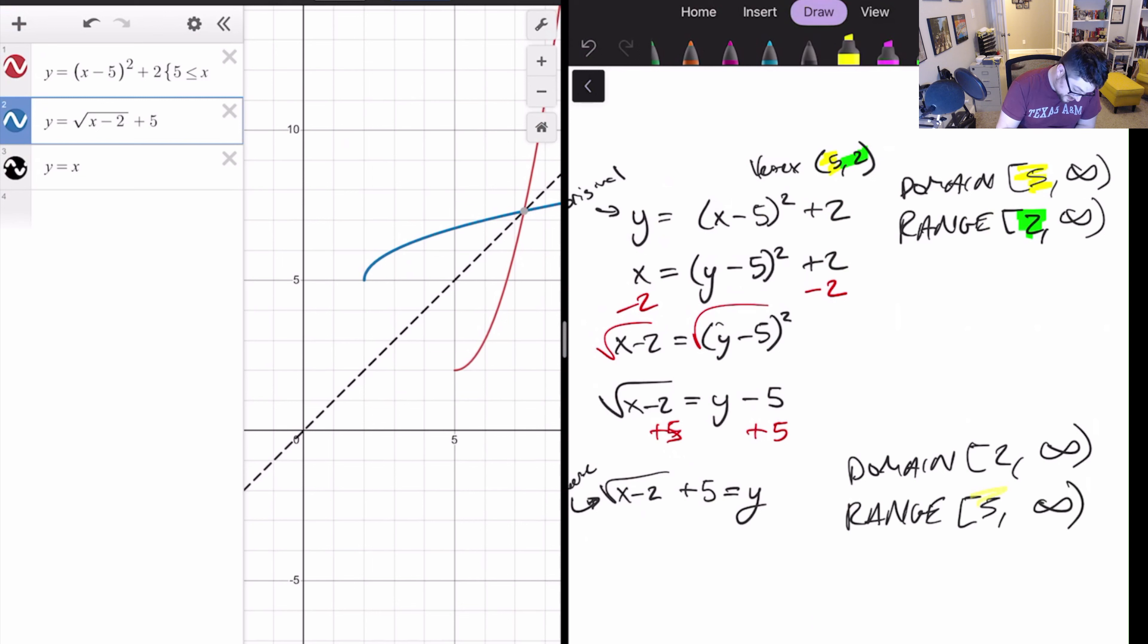And now our inverse here starts at two five which again makes sense inverse points so our domain starts at an x value and goes up and our range starts at a y value of five and goes up. So again these numbers kind of do what you expect them to do your domain range switch that's part of again why we have to put this limit is the domain of our original function should match the range of our inverse. Basically this stuff has to equal this stuff and this stuff has to equal this stuff so because of that everything matches up it's all kind of based on the vertex.